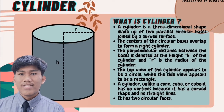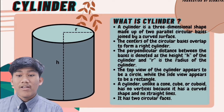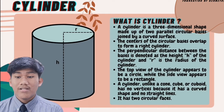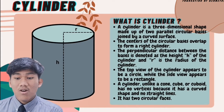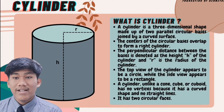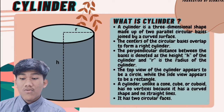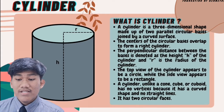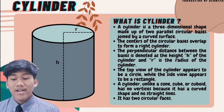Talking about cylinders — what is a cylinder? Some people do not know the properties of a cylinder, so in this video I will explain them. A cylinder is a three-dimensional shape made up of two parallel circular bases joined by a curved surface. It has two circular faces. The center of the circular bases overlap to form a right cylinder. The perpendicular distance between the bases is denoted as the height H, and R is the radius. The top view appears to be a circle while the side view appears to be a rectangle. Unlike a cone, cube, or cuboid, a cylinder has no vertices because it has a curved surface and no straight lines.